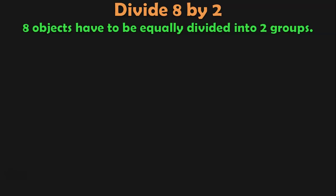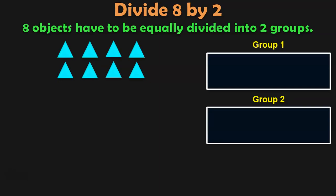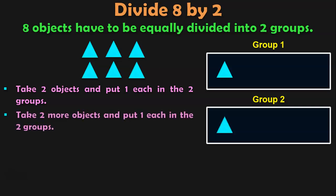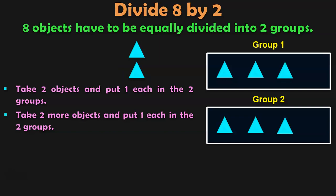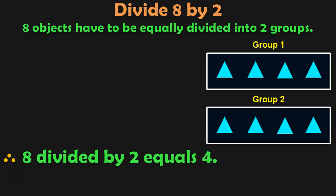8 objects have to be equally divided into 2 groups. Here we have 8 triangles and 2 groups. First step is to take 2 objects and put 1 each in the 2 groups. Then take the next 2 objects and put 1 each in the 2 groups. We still have 4 more objects, so repeat: take 2 more objects, put 1 each in the 2 groups, and once again take 2 more objects and put 1 each in the 2 groups. After taking out all the objects, we have 4 objects in each group, which means 8 divided by 2 equals 4.